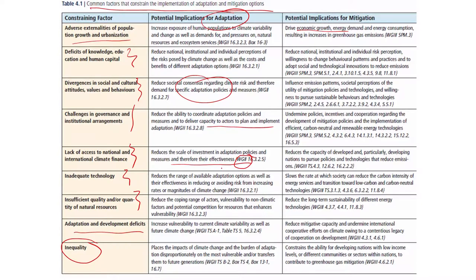The IPCC Assessment Report 5 is prepared by several working groups focused on physical science basis, impacts, vulnerability, risks, adaptation, and mitigation. Inadequate technology reduces the range of available adaptation options, and insufficient quality and quantity of resources reduces the coping range of actors. The development deficit increases vulnerability to current and future climate change - if a group is living with poor infrastructure, poor housing, and building codes, and more development does not come to improve the economy, roads, and flood management plans, that increases the vulnerability of the group.